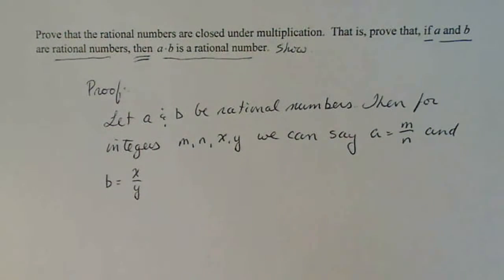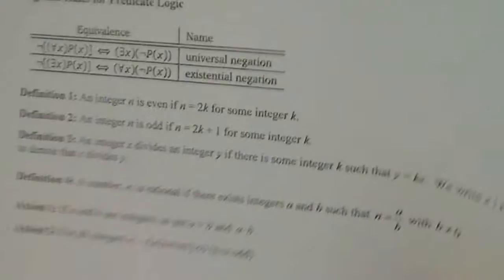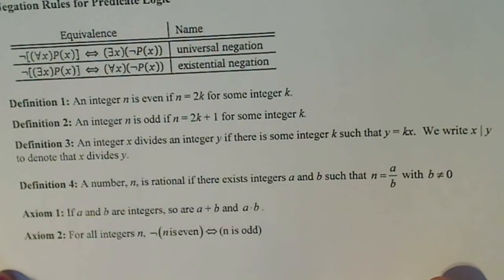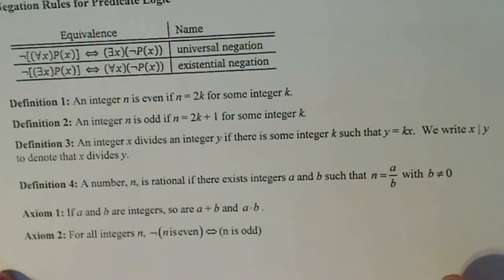we can say A is equal to M over N and B is equal to X over Y. Why can we say that? Because that's the definition of rational numbers. Definition four: a number N is rational if there exists integers A and B such that N equals A over B with B not zero.